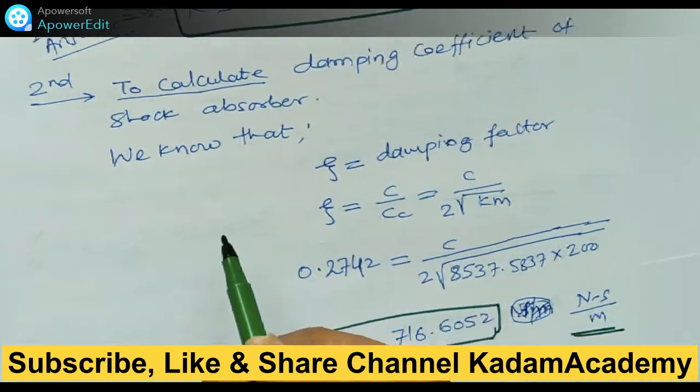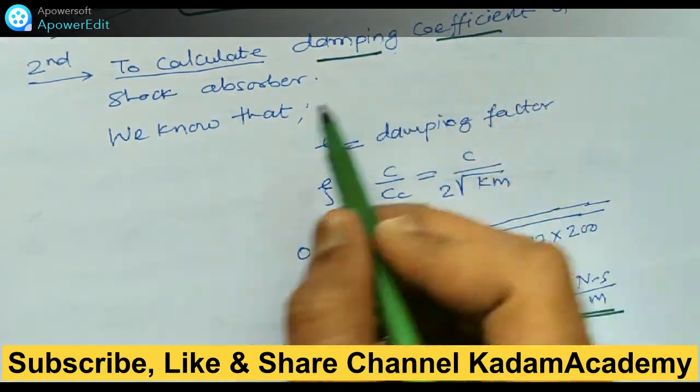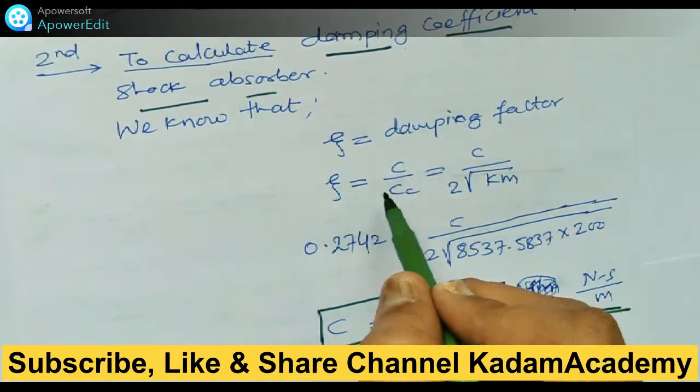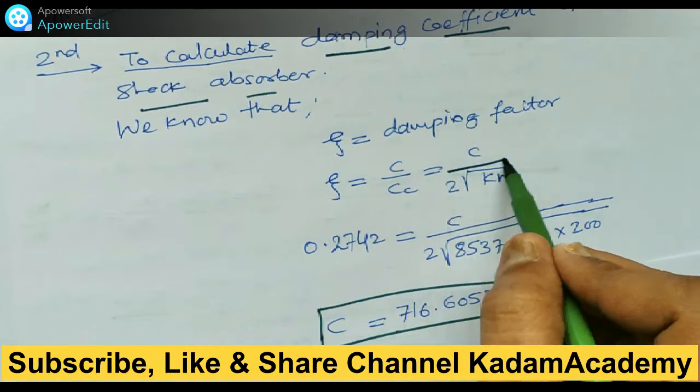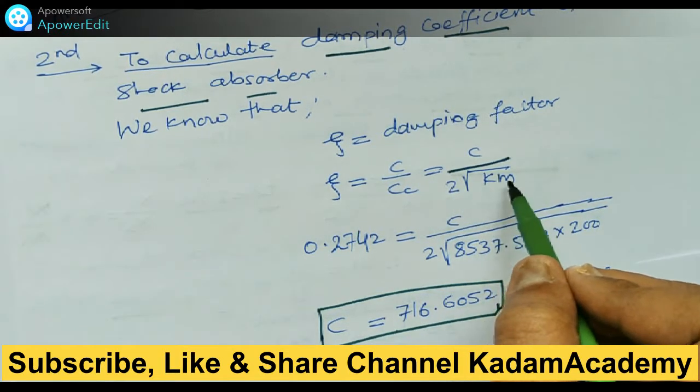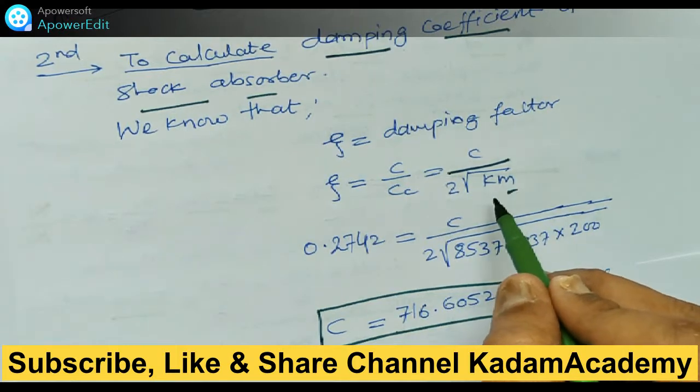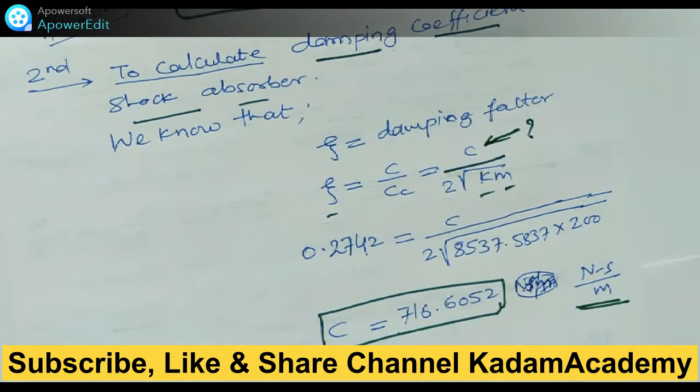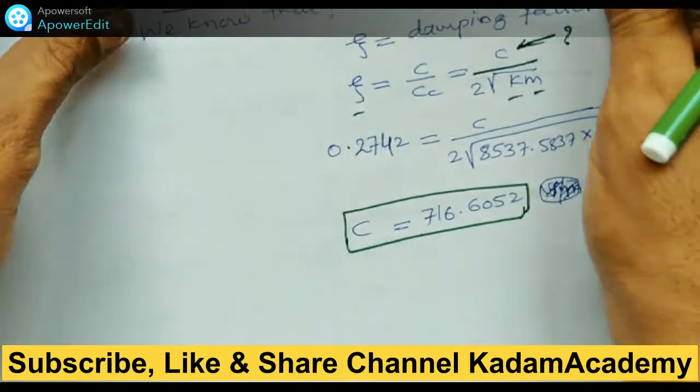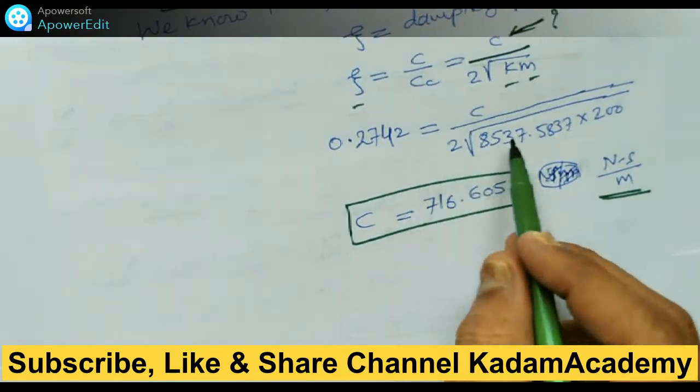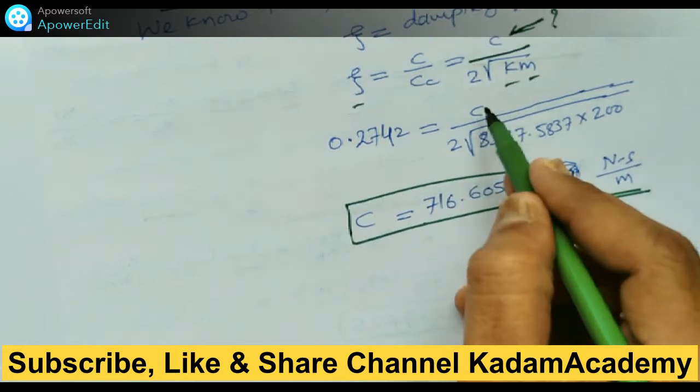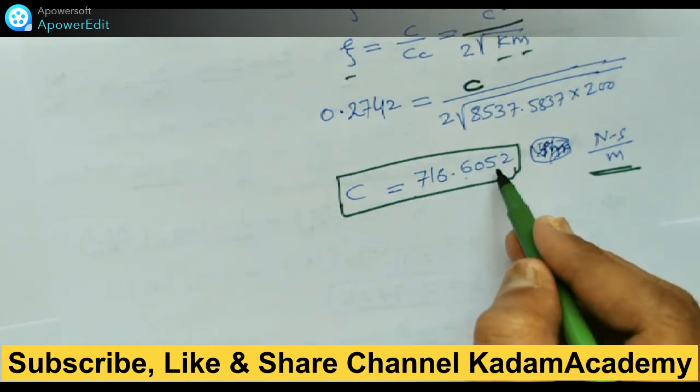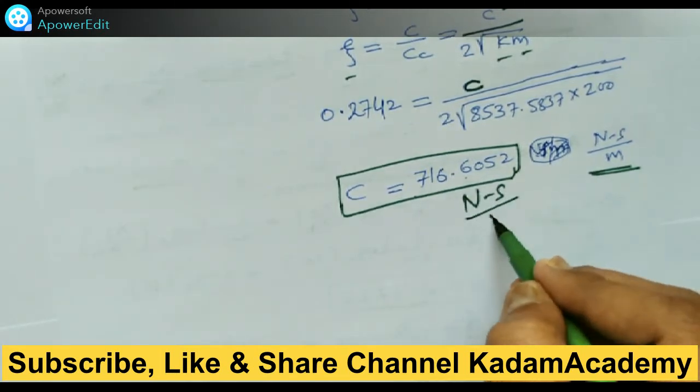Now we have to find the damping coefficient. The damping factor zeta = c/(2*sqrt(km)). Since m, k, and zeta are known, we can find c. Putting all these values and multiplying, we get c = 716.6052 Ns/m.